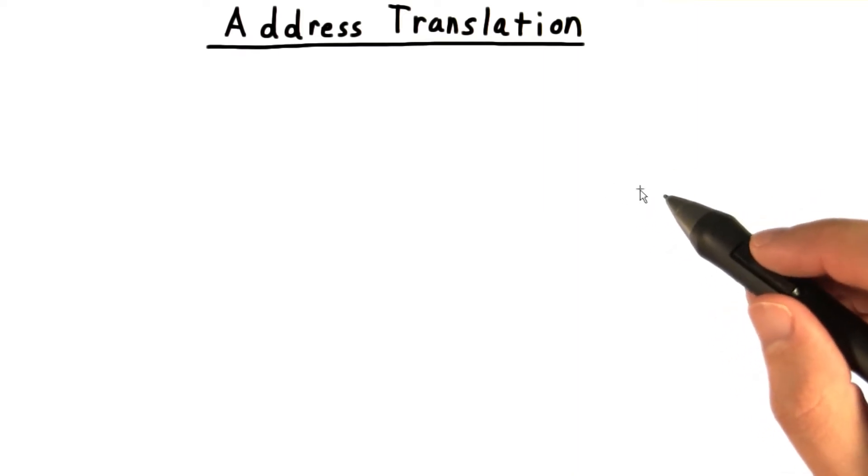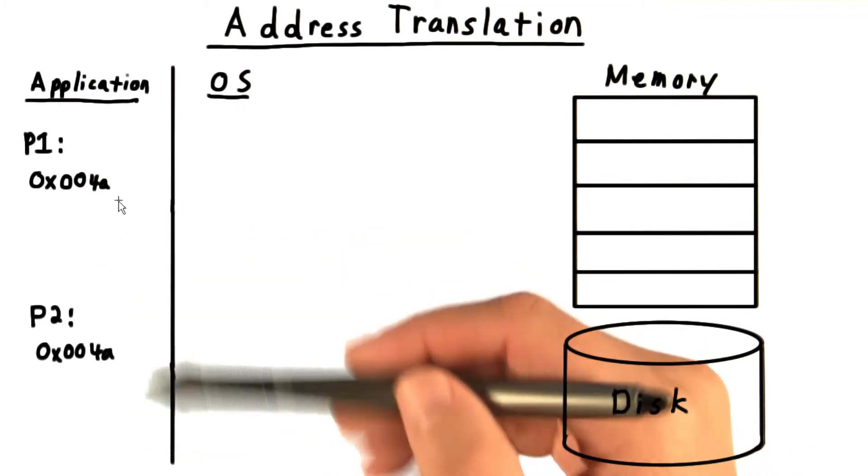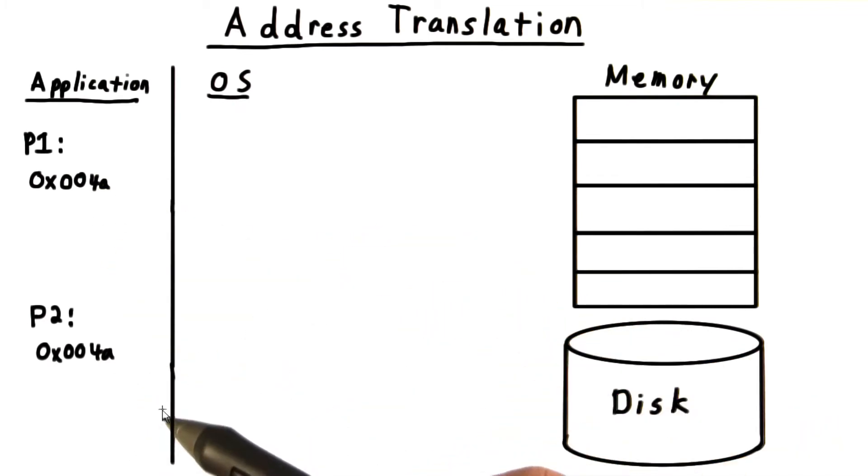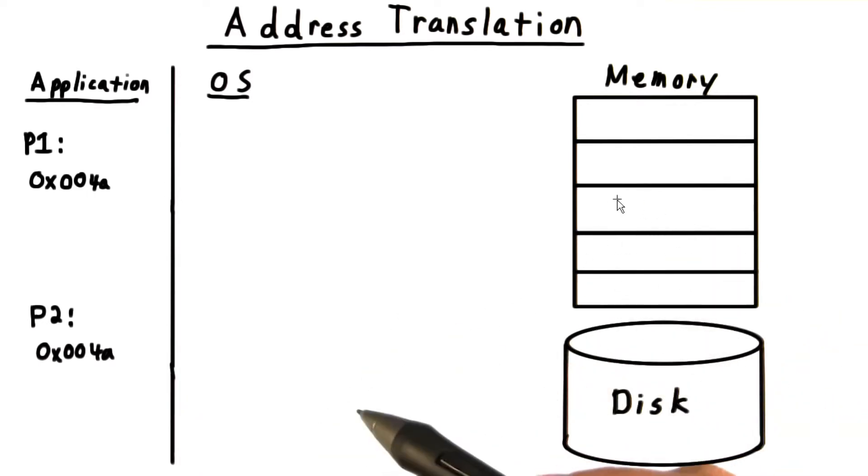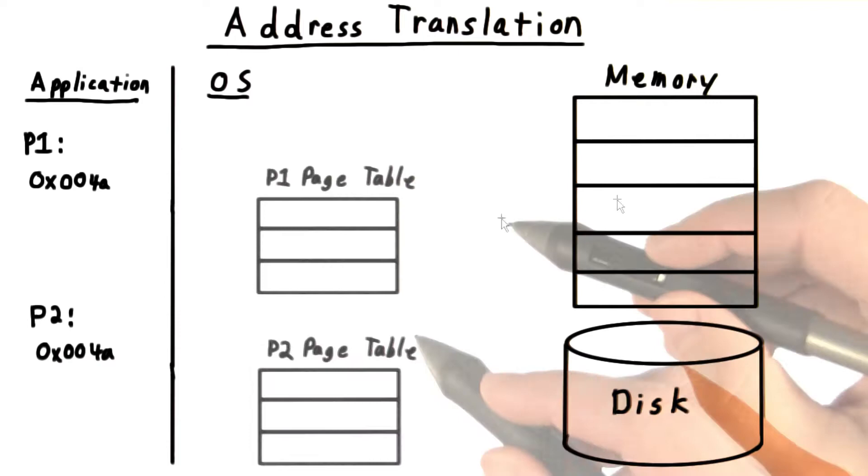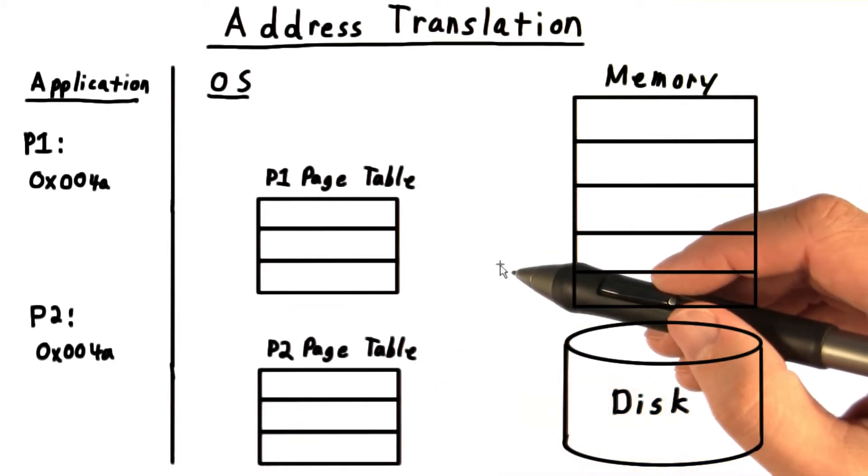The key to maintaining the virtual memory abstraction is a layer of indirection. Without this layer of indirection, two processes couldn't use the same address for a variable because then they would end up overwriting each other. This would make life very difficult for programmers and compilers. So we play one of the classic computer science tricks and introduce a layer of indirection.